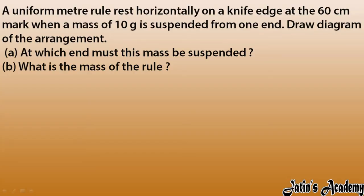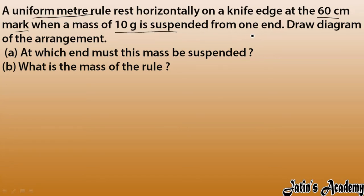Now let's see the next question. We have a uniform meter rule — meter rule means 100 centimeter rule — resting horizontally on a knife edge at the 60 centimeter mark. When a mass of 10 gram is suspended from one end, we have to find at which end it must be suspended and what is the mass of the rule.